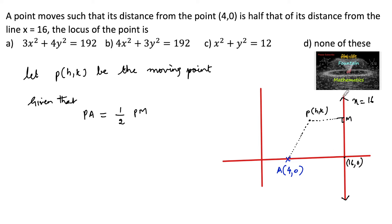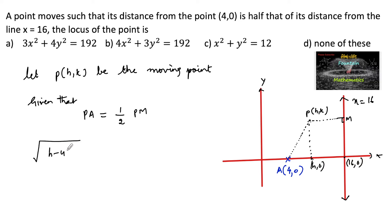Since x = 16 is parallel to the y-axis, the perpendicular distance from P to the line will be 16 − h. Using the distance formula from P to A, we have: √((h − 4)² + (k − 0)²) = (1/2) × (16 − h).